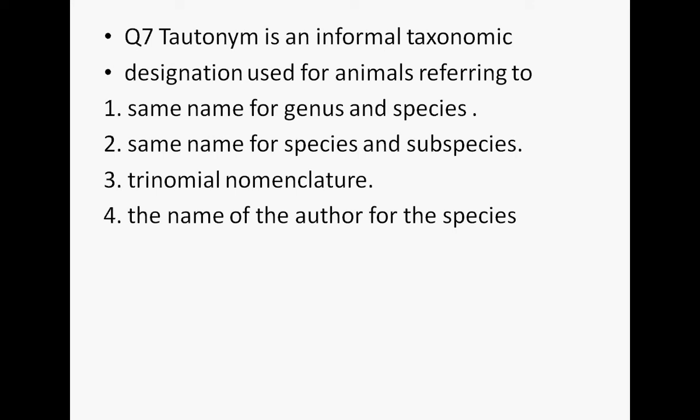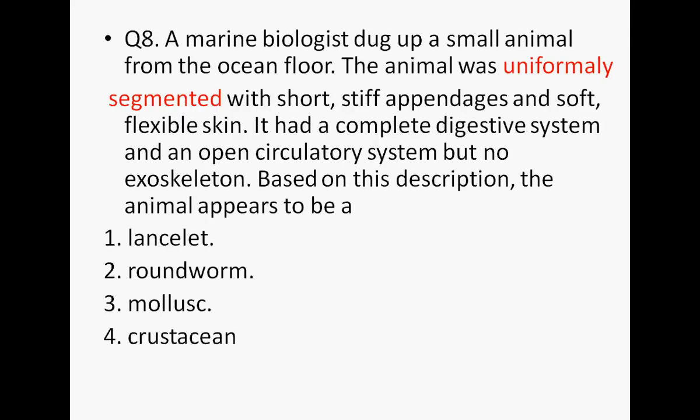Tautonymy is an informal taxonomic designation used when the same name is given to both genus and species. Trinomial nomenclature refers to naming the author and species. A tautonym is when the names of genus and species are identical — for example, Malus malus. Tautonyms are very common in animals but not common in plants.